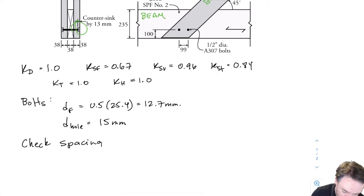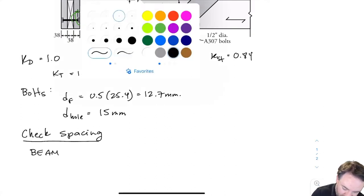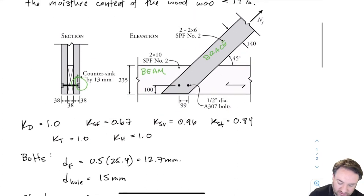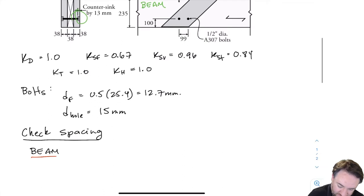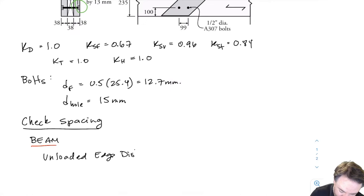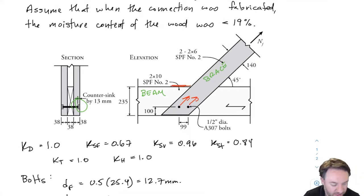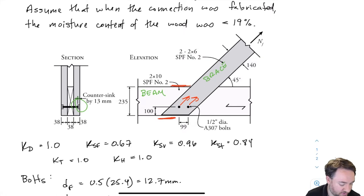Before going further, let's check our spacings and make sure they are adequate. We're going to separate the checks by the beam and the brace. The beam is the horizontal piece and the brace is the piece on the diagonal. For the beam, our unloaded edge distance: the bolts want to move upward, so the top edge is the loaded edge and the bottom edge is the unloaded edge. That means our unloaded edge distance is 100mm.